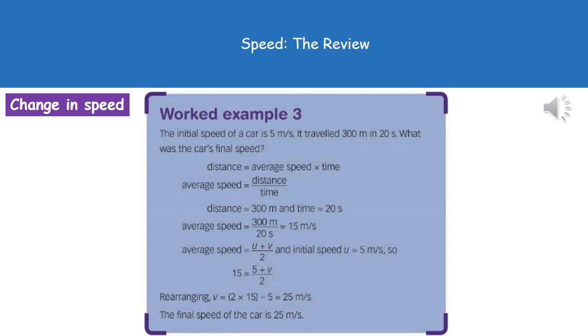What we need to do now is rearrange that equation. The key thing to remember is whatever you do to one side you have to do to the other as well. First of all, to get rid of that divide by 2, we have to multiply each side by 2, which gives us 30 equals 5 plus v. Then to get rid of the 5, we just take 5 away from each side. So 30 minus 5 gives us 25 meters per second, which is the final speed of our car.